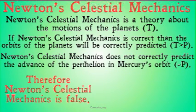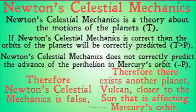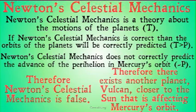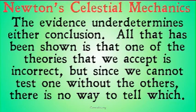The problem is that we could also come up with another conclusion: therefore, there exists another planet, Vulcan, closer to the sun that is affecting Mercury's orbit. And in fact, that was the conclusion drawn by many scientists at the time. Instead of denying the original theory, they denied one of their assumptions — saying it's possible for Newton's celestial mechanics to be correct but not predict the orbit of the planets correctly, because we don't have the right information about what planets exist. The evidence underdetermines the conclusion; all that has been shown is that one of the theories we accept is incorrect, but since we can't test one without all the others, there's no way to tell which theory is incorrect.